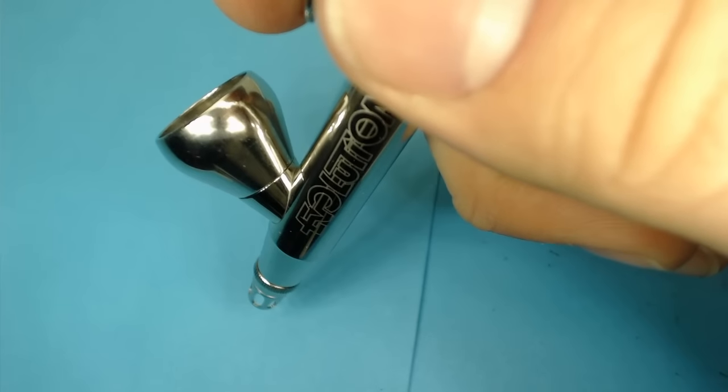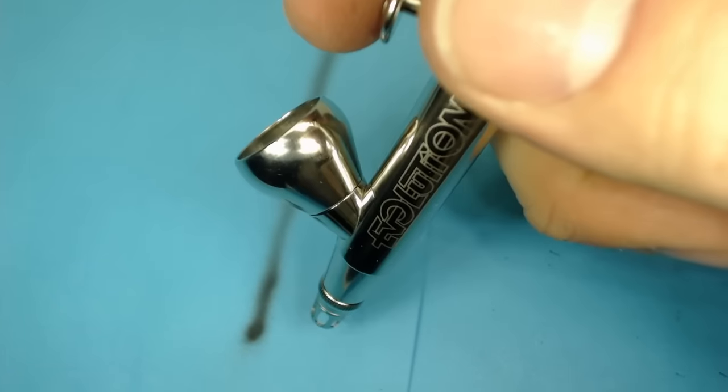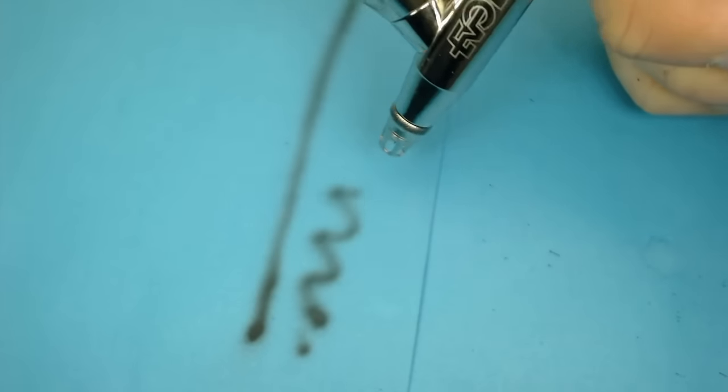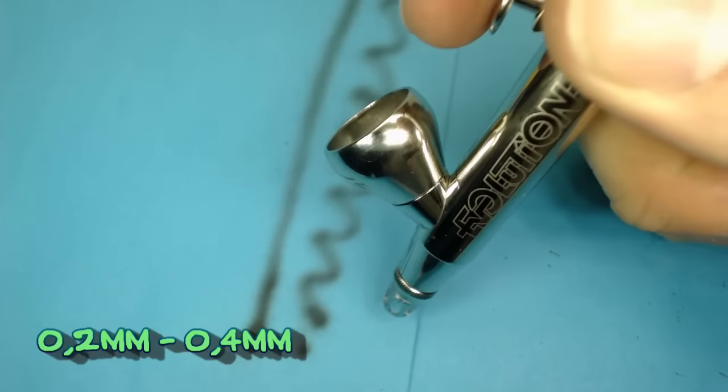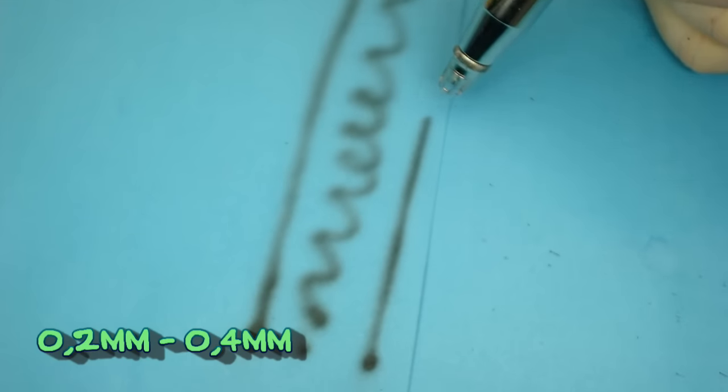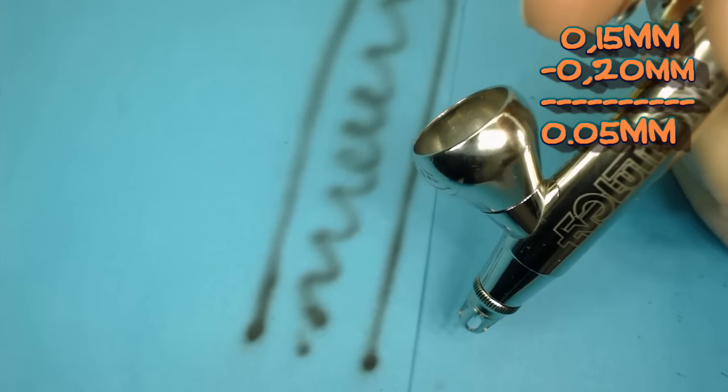Now to the Evolution. The Evolution comes with a needle 0.2 mm and as in the Infinity you can use needles between 0.2 to 0.4. This half millimeter makes a huge difference when you're drawing details. Of course you won't be able to paint the smallest details, but you also have less clog problems. In 6 months it clogged me only one time.